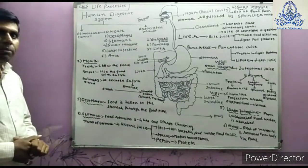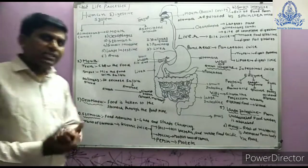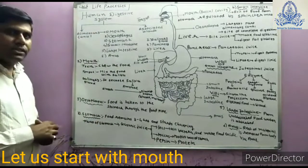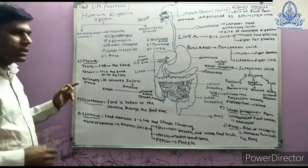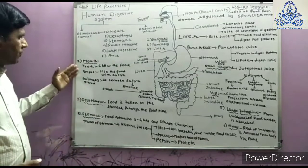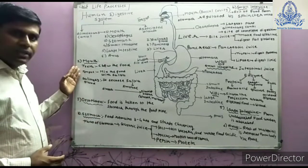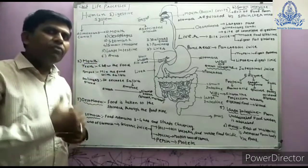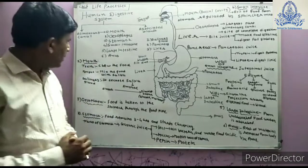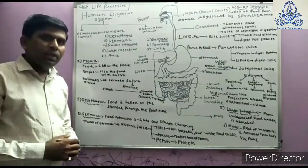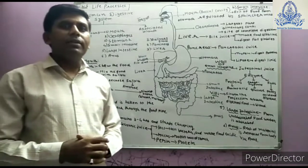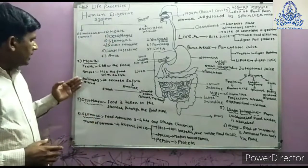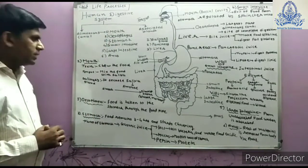Now let's start with the mouth — how the food is digested and how it is absorbed into the blood. The mouth contains teeth, tongue, and salivary glands. Teeth help chew the food and convert bigger particles into smaller particles. The tongue mixes the food with saliva so the food particles become wet and can be easily swallowed.